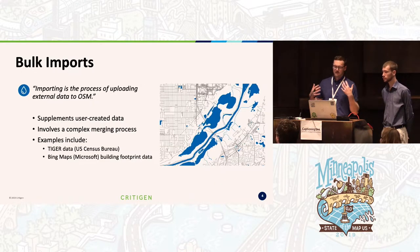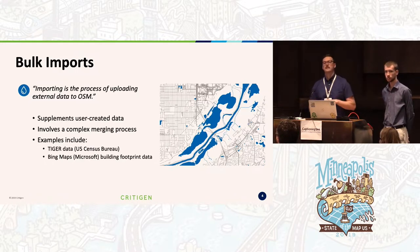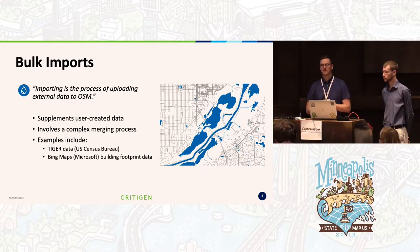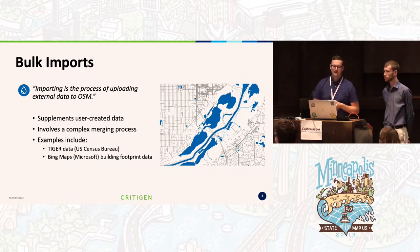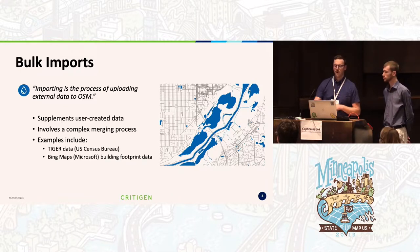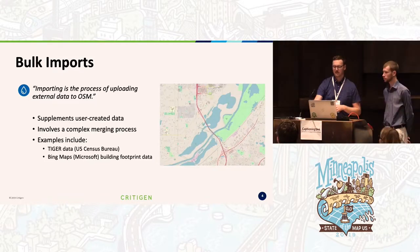The OSM Wiki defines bulk imports as the process of uploading external data to OSM, which acts as a supplement to user-created data. It usually involves a complex merging process. Some pretty popular examples in the U.S. include the Tiger data and big maps, and you can see how that data makes its way into OSM.